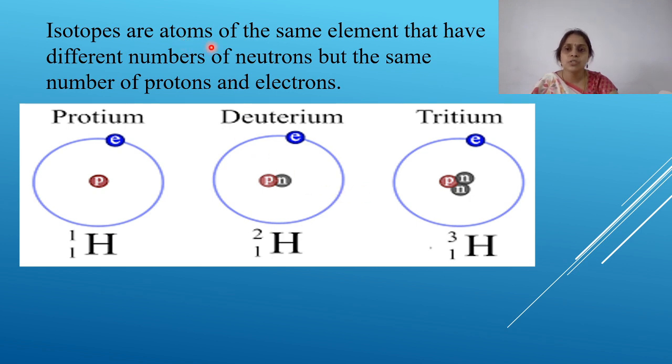Next, what are isotopes? Isotopes are the atoms of the same element which have different number of neutrons and same number of protons and electrons. You can see all the three. It's an isotope of hydrogen: protium, deuterium, tritium. Proton electrons are same but there's no neutron in first one, protium. There's only one neutron in the second one and in third one when you see there are two neutrons. So these are isotopes.